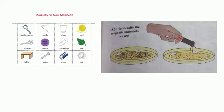Let us do an activity. Take a mixture of sand, pieces of paper, sawdust, iron filings, and pins in a saucer, and pass a magnet around the mixture. When you pass a magnet around the mixture, you will see that some materials will get attracted to the magnet — they will stick to it — while some materials will not stick to the magnet.